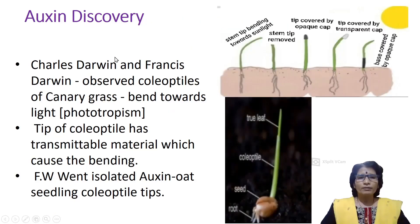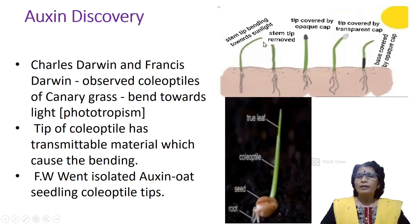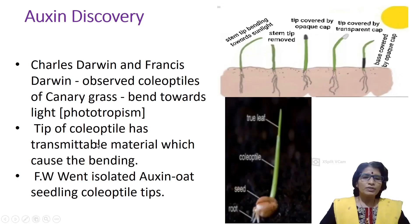Auxin discovery: Charles Darwin and Francis Darwin observed that coleoptiles of canary grass bend towards sunlight — phototropism. The coleoptile is a protective sheath on the stem tip. In their experiments: first, normal canary grass seedlings bent towards sunlight. Second, when the coleoptile tip was cut, there was no bending because the tip region contains the transmittable material that causes bending.